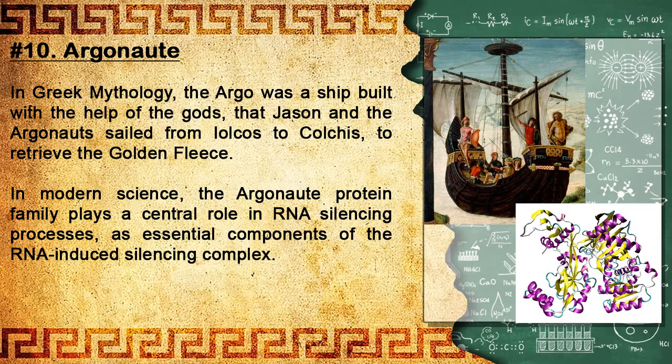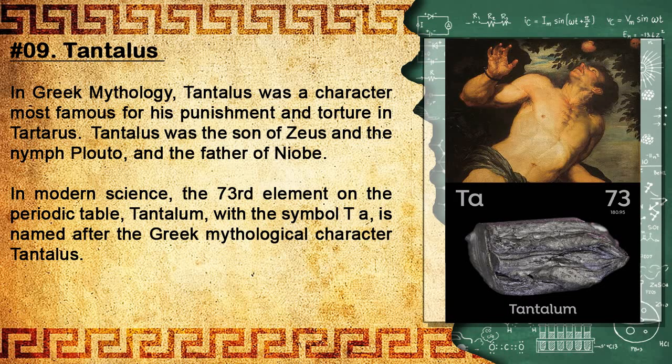Number 10: Argonaut. In Greek mythology, the Argo was a ship built with the help of the gods that Jason and the Argonauts sailed from Iolcos to Colchis to retrieve the Golden Fleece. In modern science, the Argonaute protein family plays a central role in RNA silencing processes as essential components of the RNA-induced silencing complex.